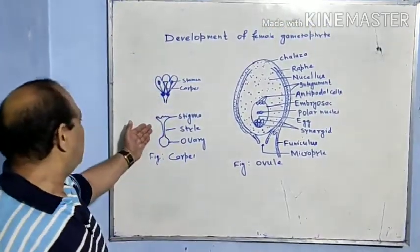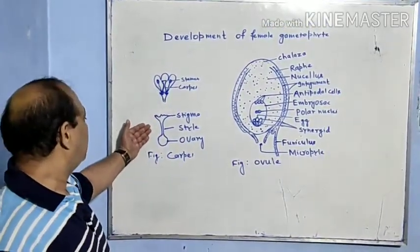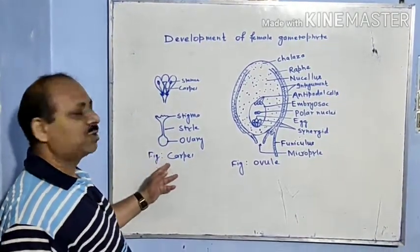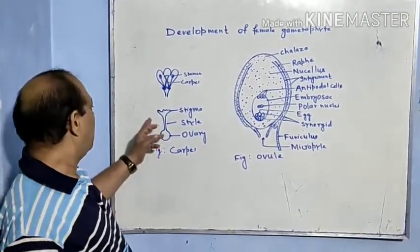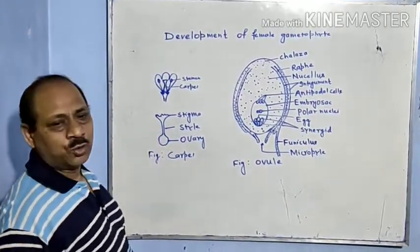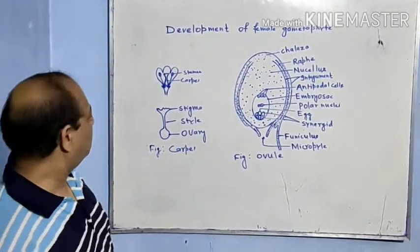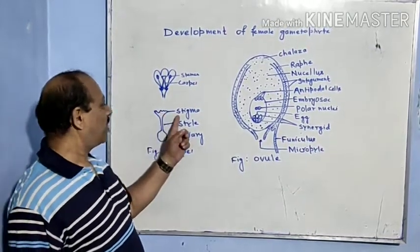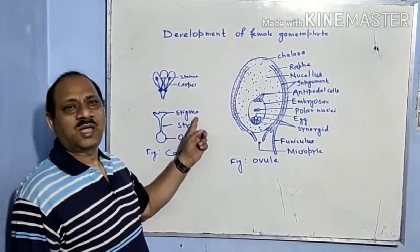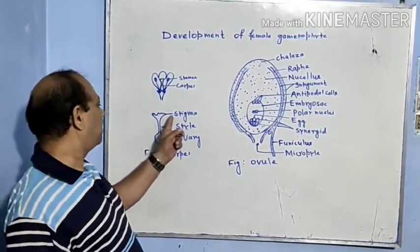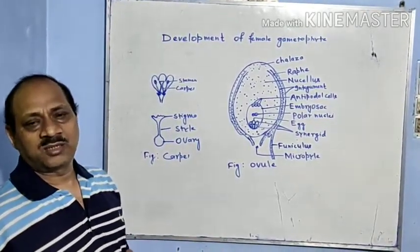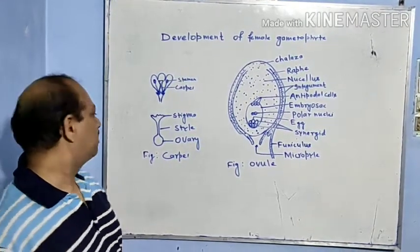Here you can see the diagram of a pistil or carpel. A pistil or carpel can be divided into three parts. The upper broad part is known as stigma, and it receives pollen grains at the time of pollination.